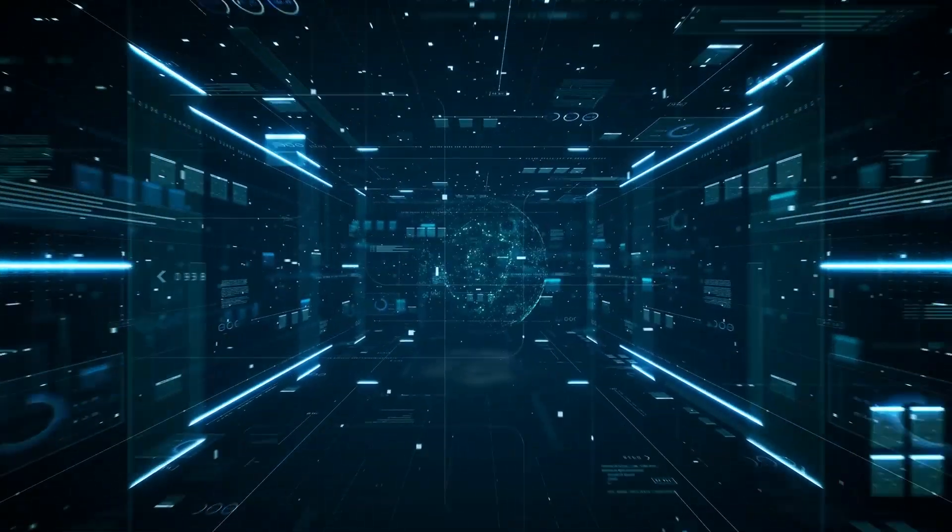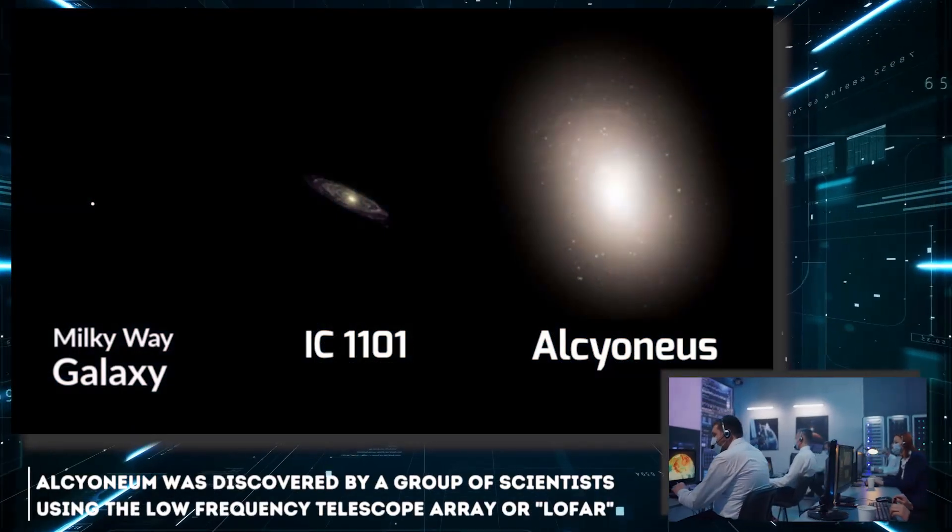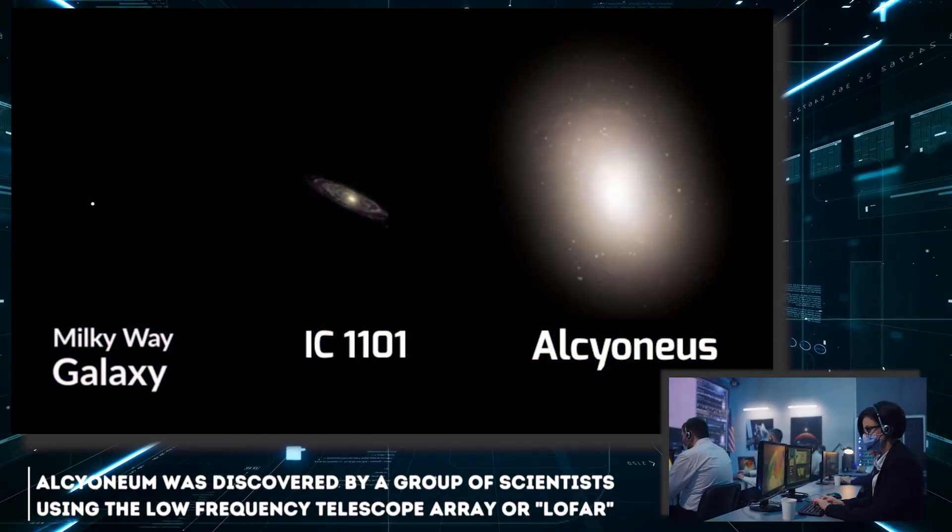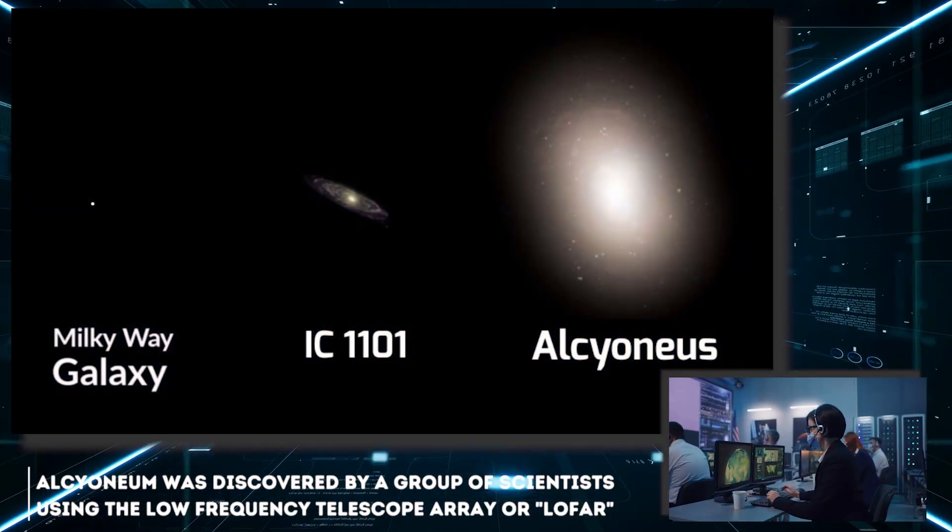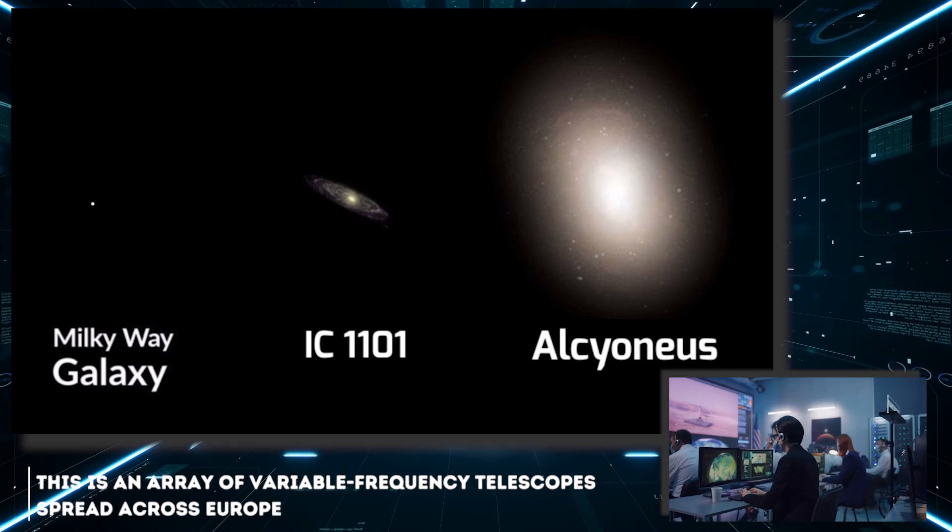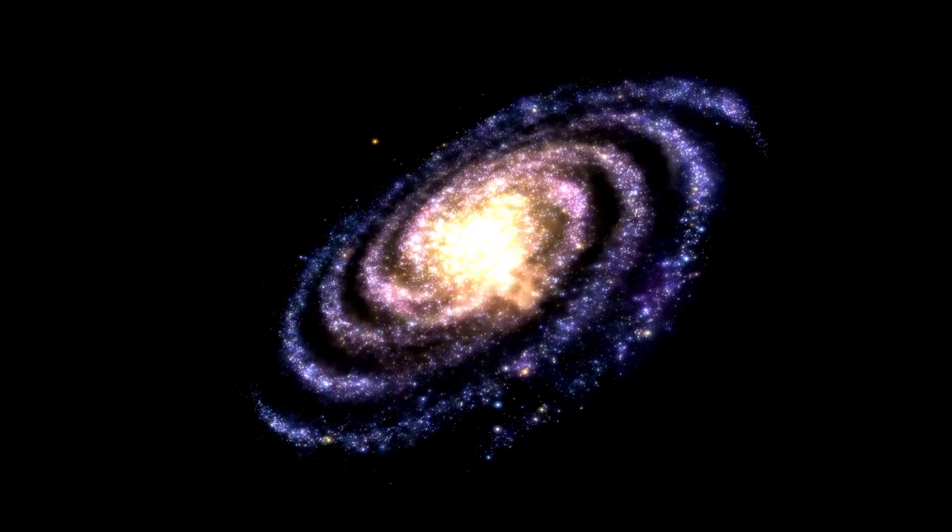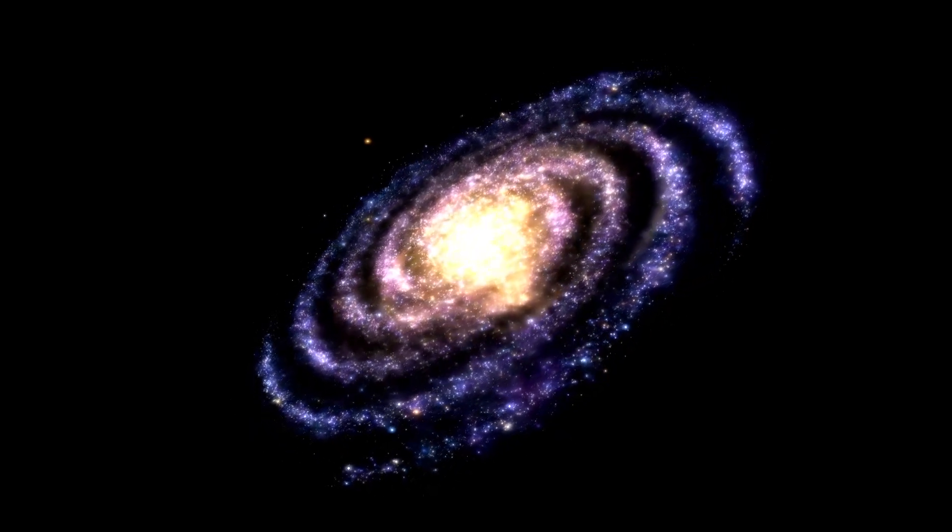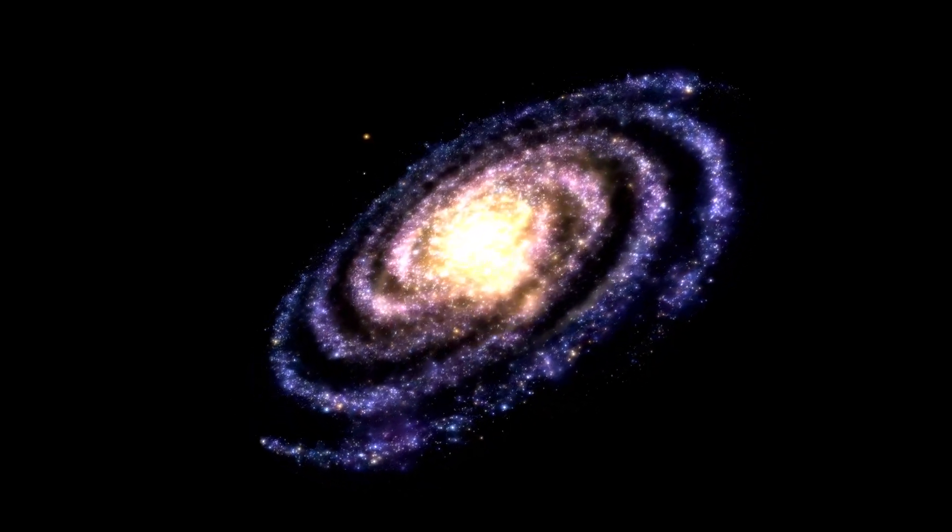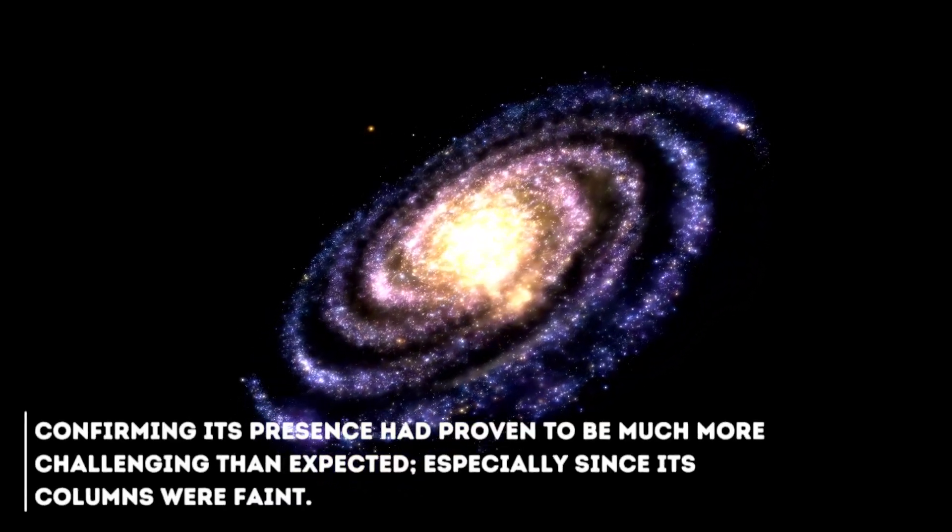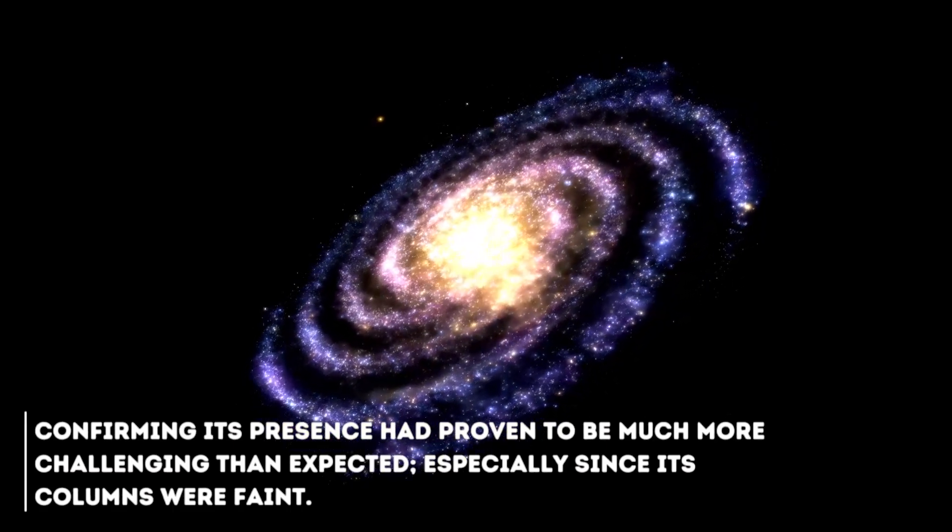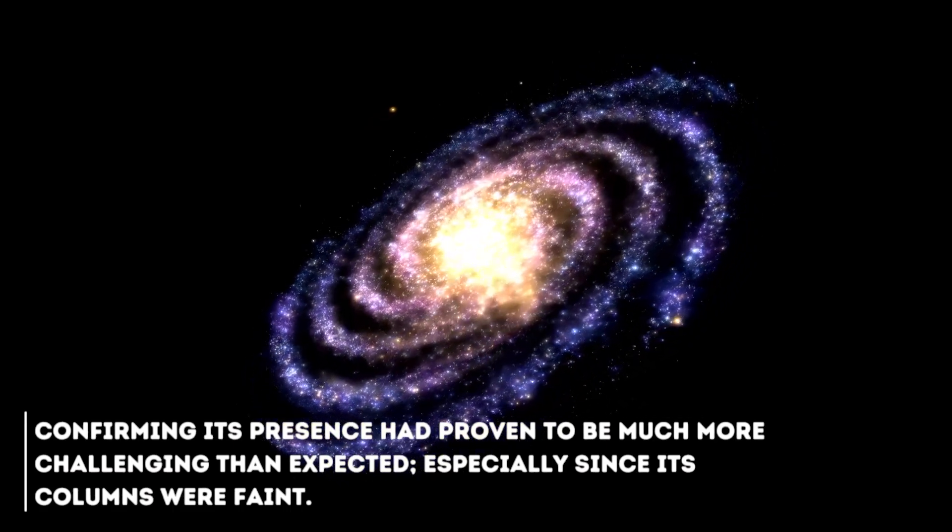At the time, Alcinean was discovered by a group of scientists using the Low Frequency Telescope Array, or LOFAR. This is an array of variable frequency telescopes spread across Europe. Although the existence of Alcinean had been suspected for some time, confirming its presence had proven to be much more challenging than expected, especially since its columns were faint.